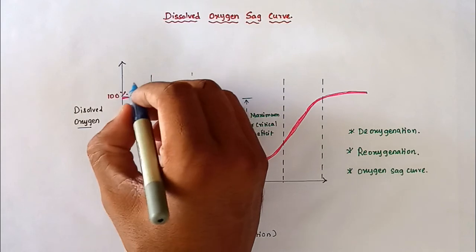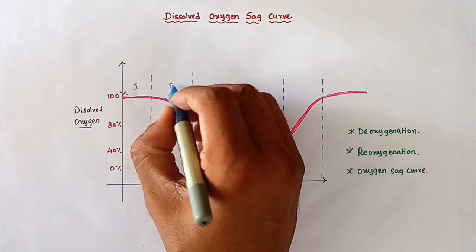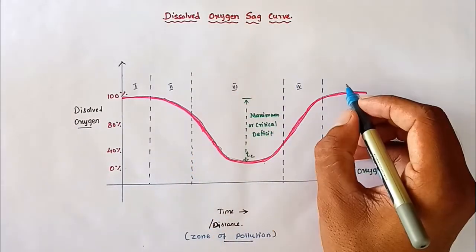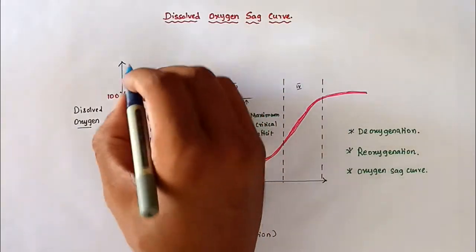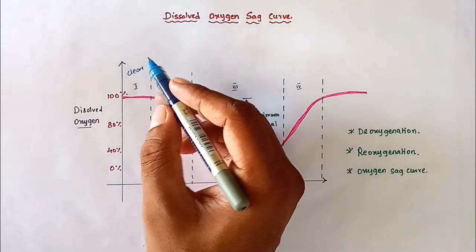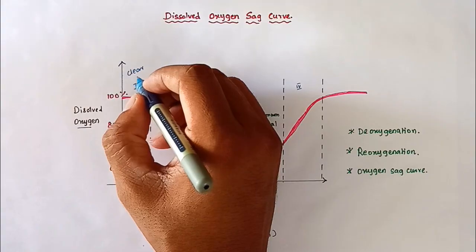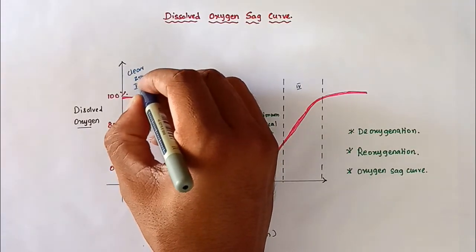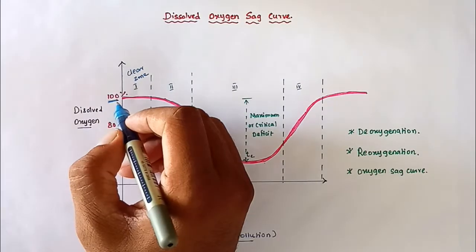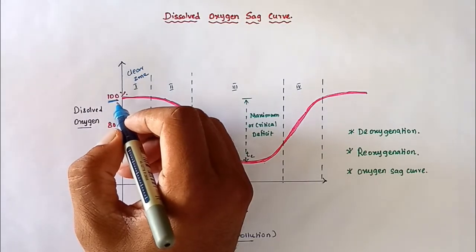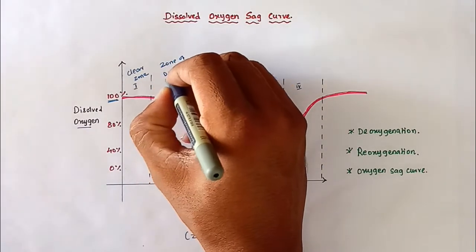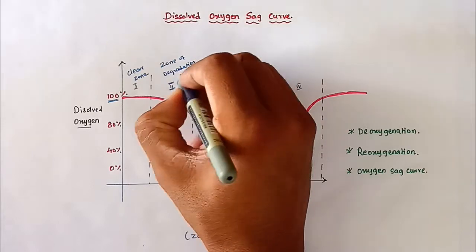There are four zones in total. The first zone is the clear zone, where the effluent is mixed in the river and there is clear water in the river. In this zone, the dissolved oxygen level is 100% and likewise the biological oxygen demand (BOD) is zero.